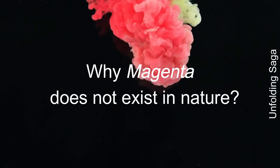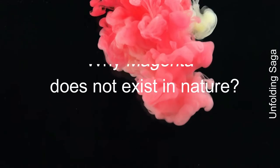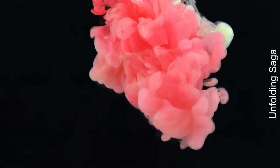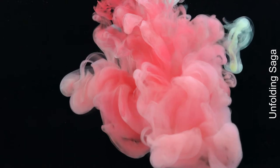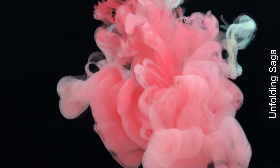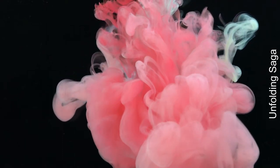Why magenta does not exist in nature. This color is placed between blue and red, and does not have its own wavelength like green does, and does not appear in the visible color spectrum. Green is also between blue and red, has a wavelength, and does exist in nature.